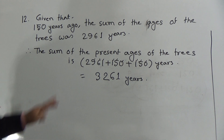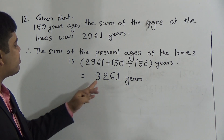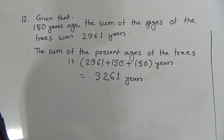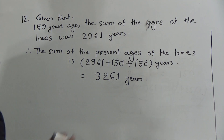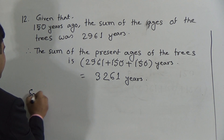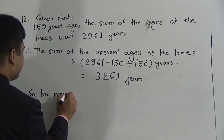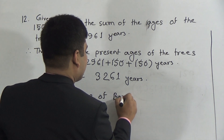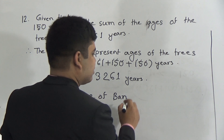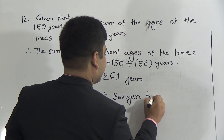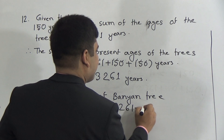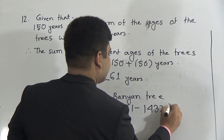So this is the sum of the present ages of the trees. The present age of the pine tree is given. So if we subtract this present age of the pine tree, then we get the present age of the banyan tree. Therefore, the present age of the banyan tree is 3,261 minus 1,432 years.